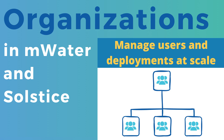In this video, we will look at the organizations feature in MWater and Solstice, and how you can use that to manage users, deployments, and data at scale. By scale, I mean anything from a single office to a district or region, up to a whole country, or even internationally across regions and countries. There's really no strict limit to how large your organization structure in MWater or Solstice can grow.